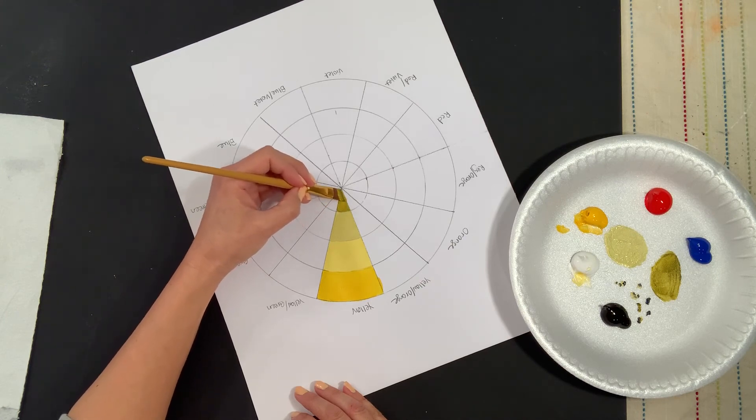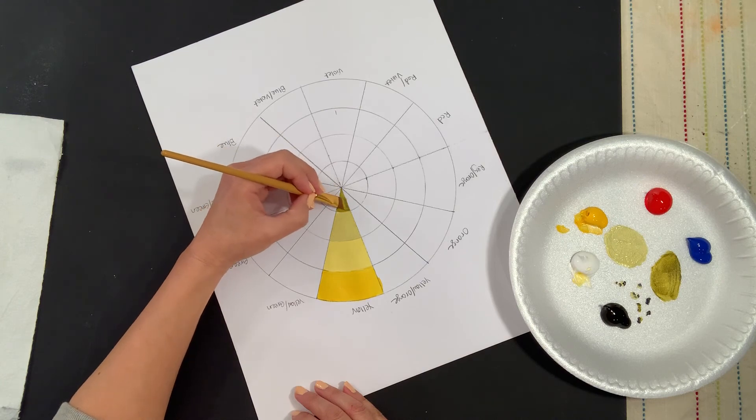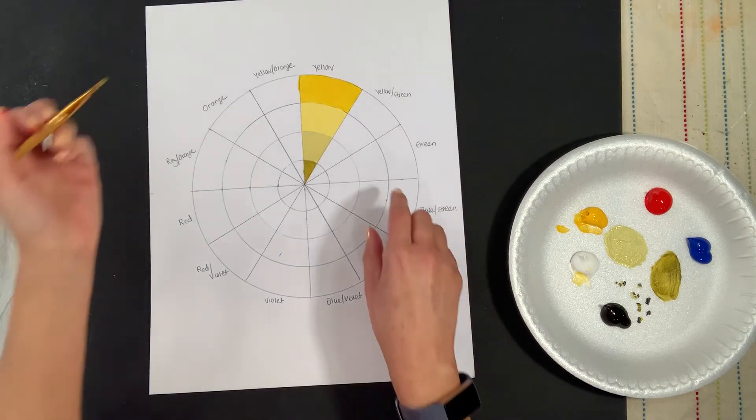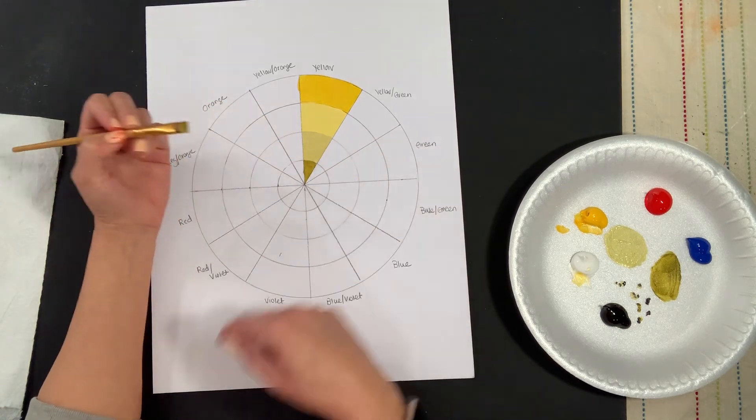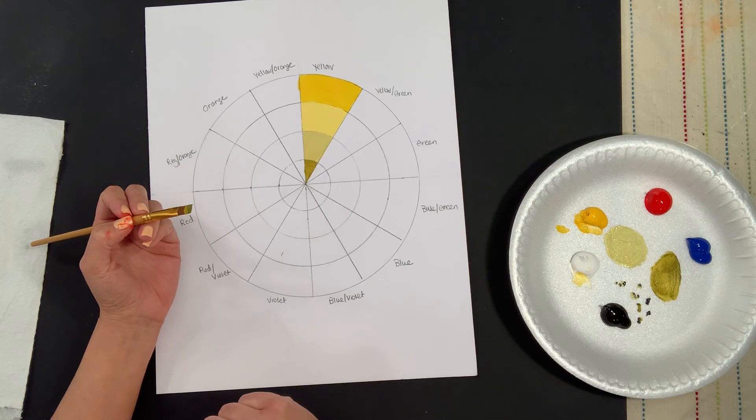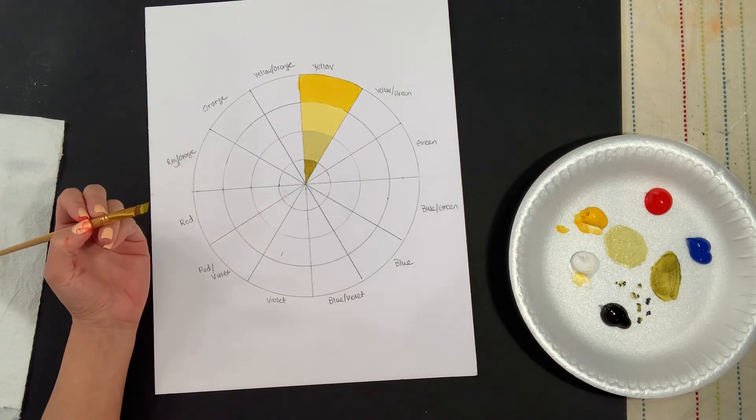As you can tell, not much color is needed at all as we mix because this is a really small little pie slice at the end. Okay, so now I have my hue, tints, tones, and shades. I'm going to go ahead and do the red and the blue and then we will play this again when I start with the secondary colors. Okay, thank you.